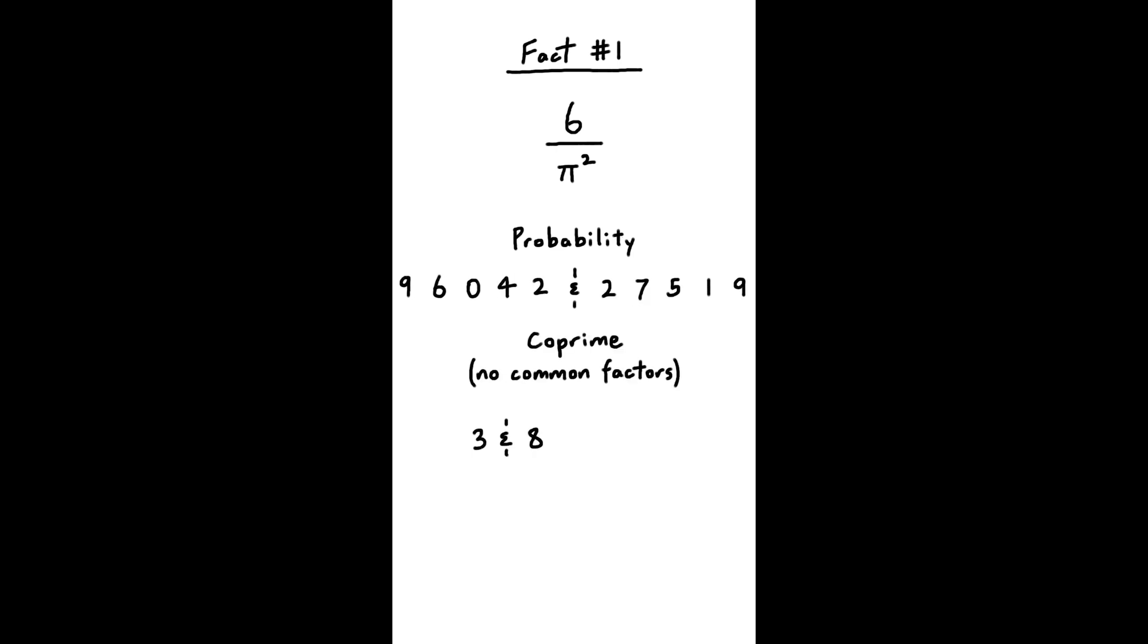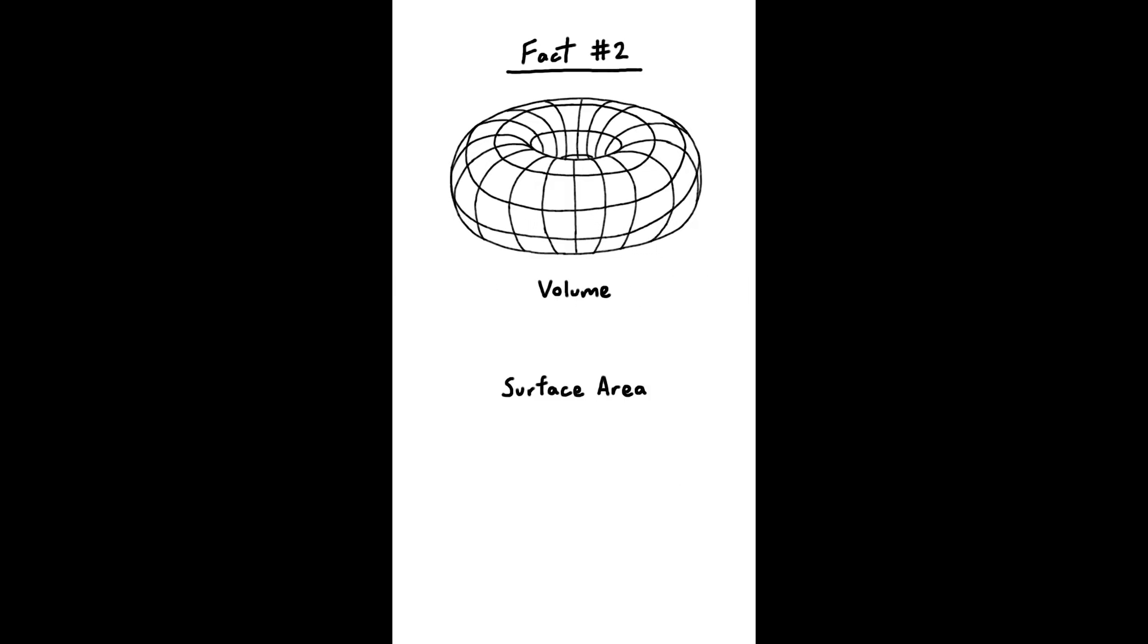For example, 3 and 8 are coprime, but 4 and 6 are not, since they're both divisible by 2. Second, a donut's volume and surface area formula also have pi squared in it, which is weird because you almost never see that.